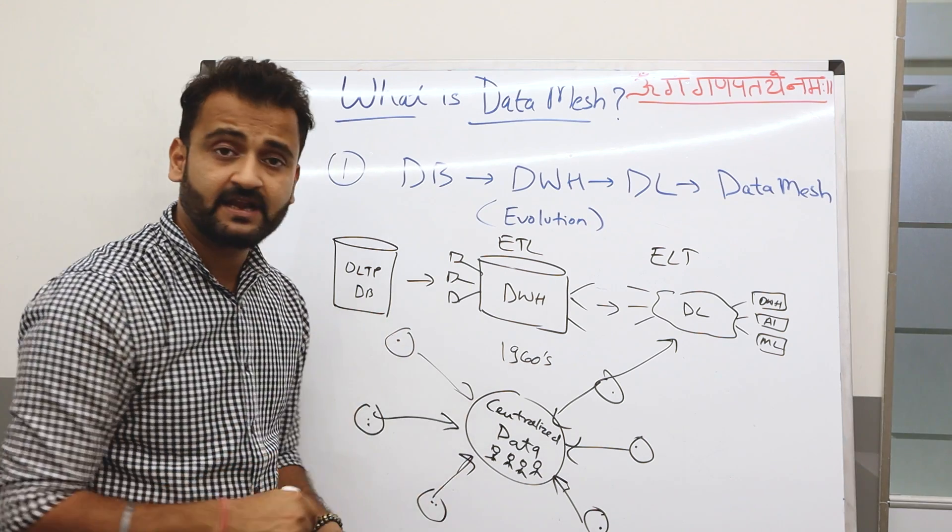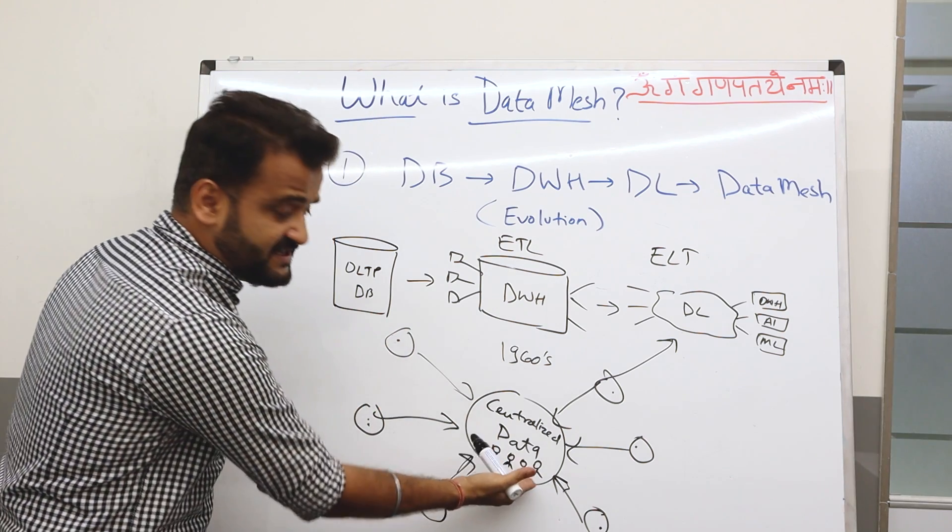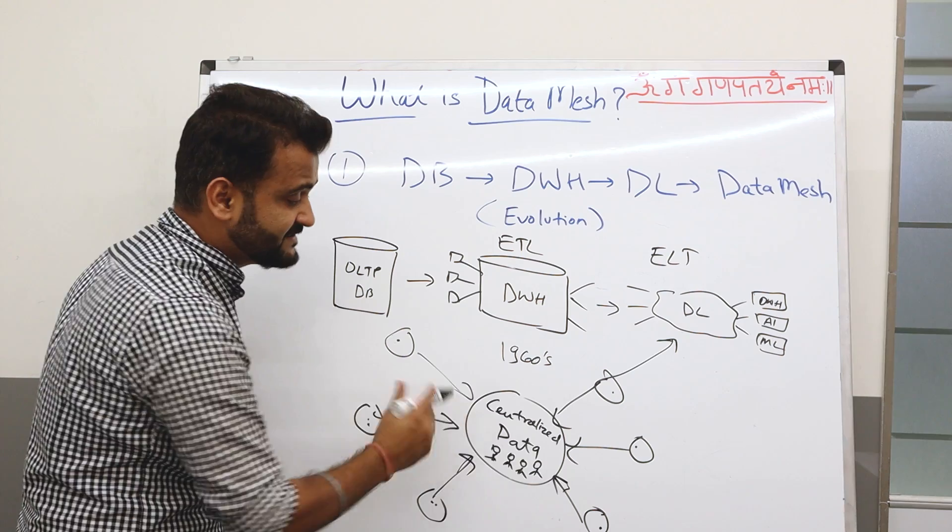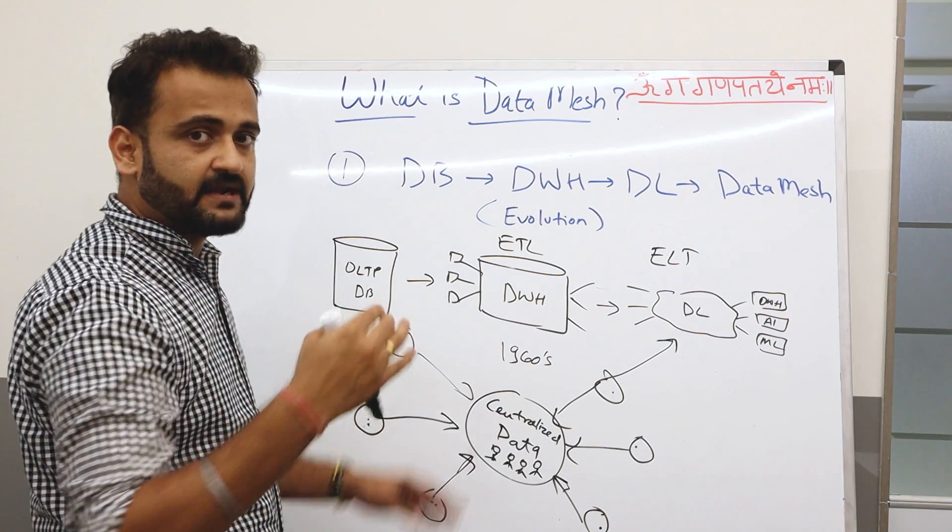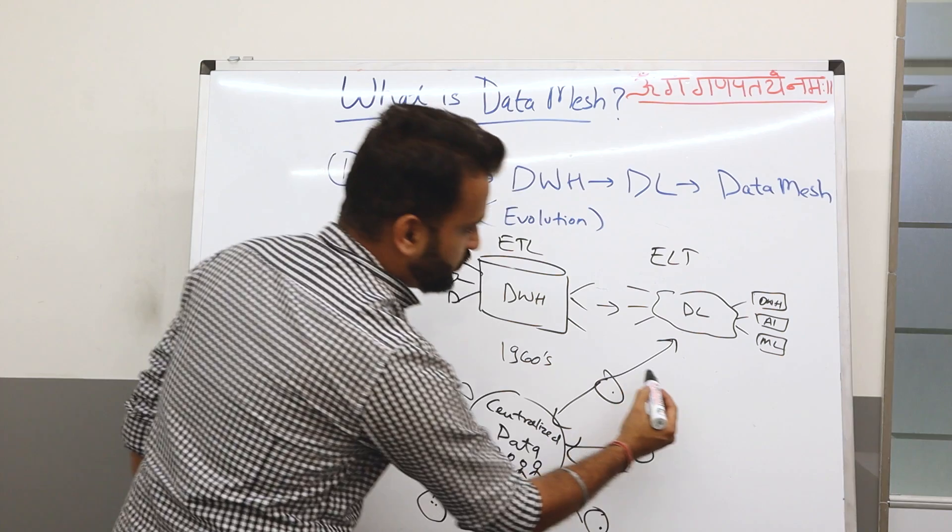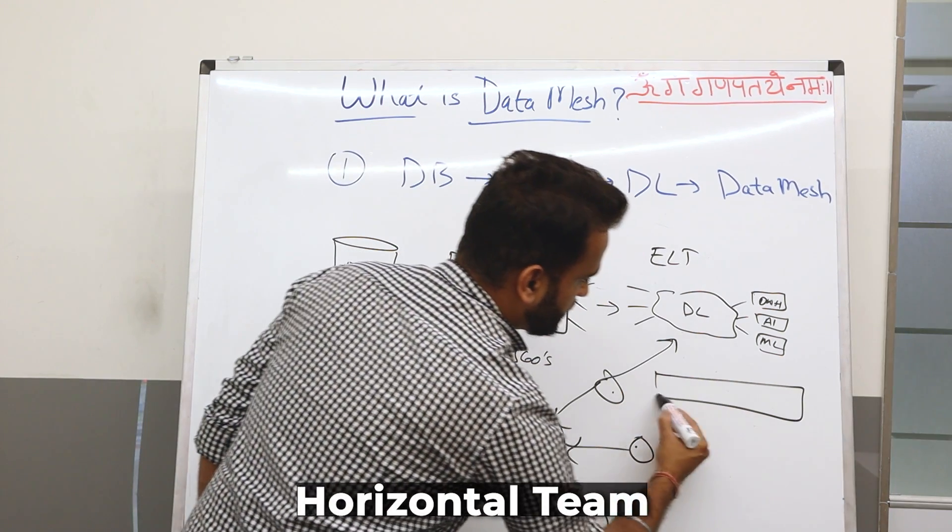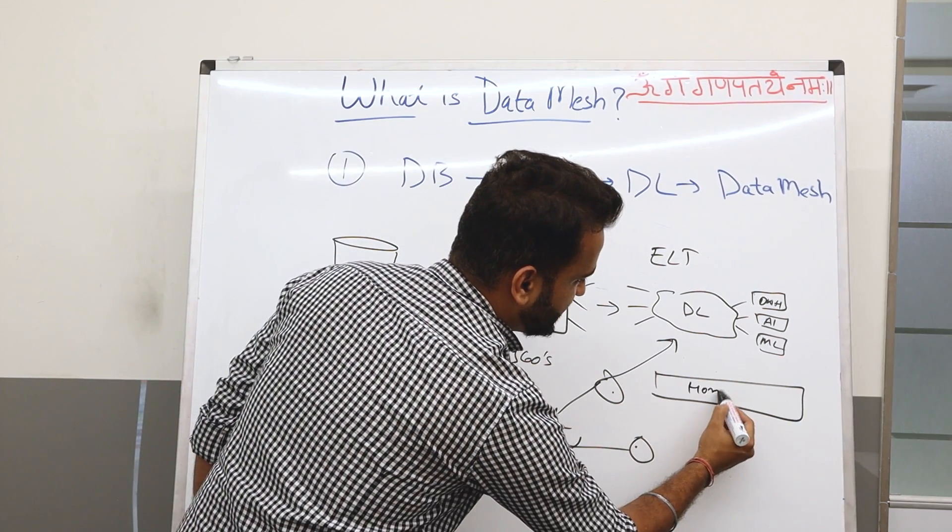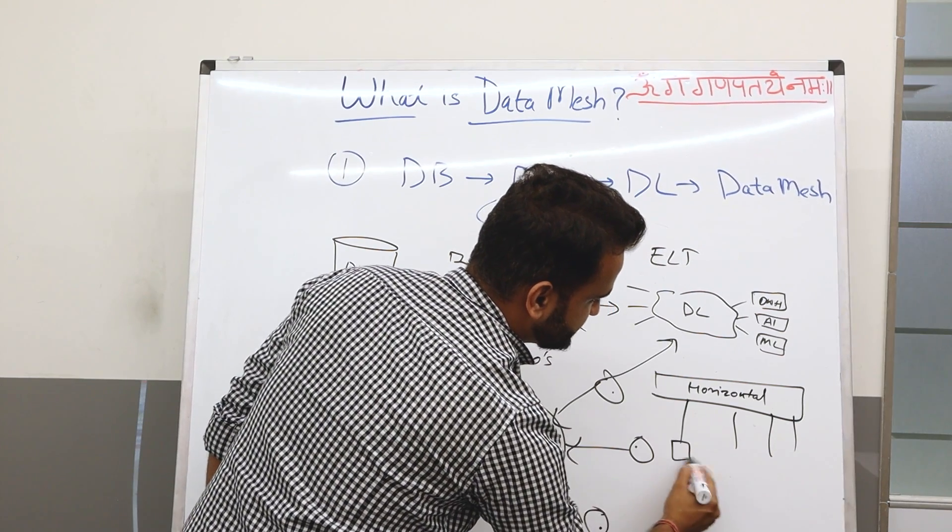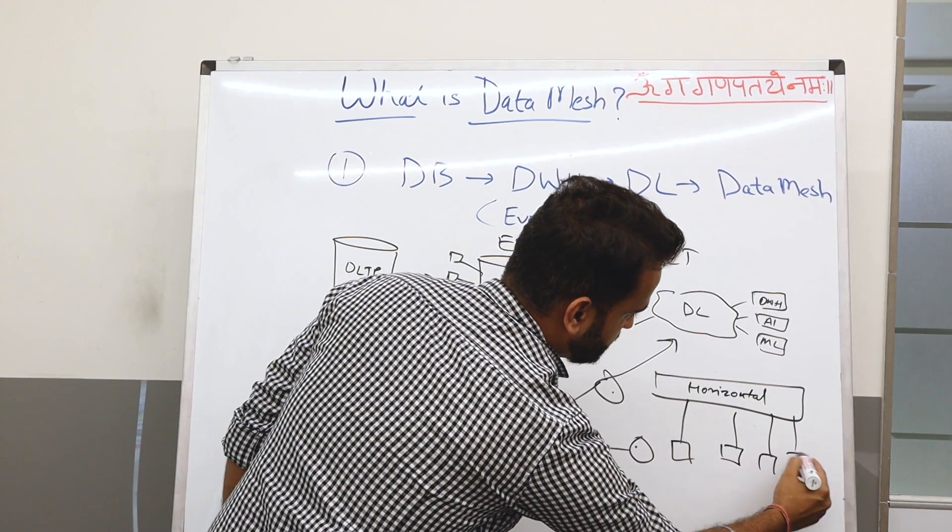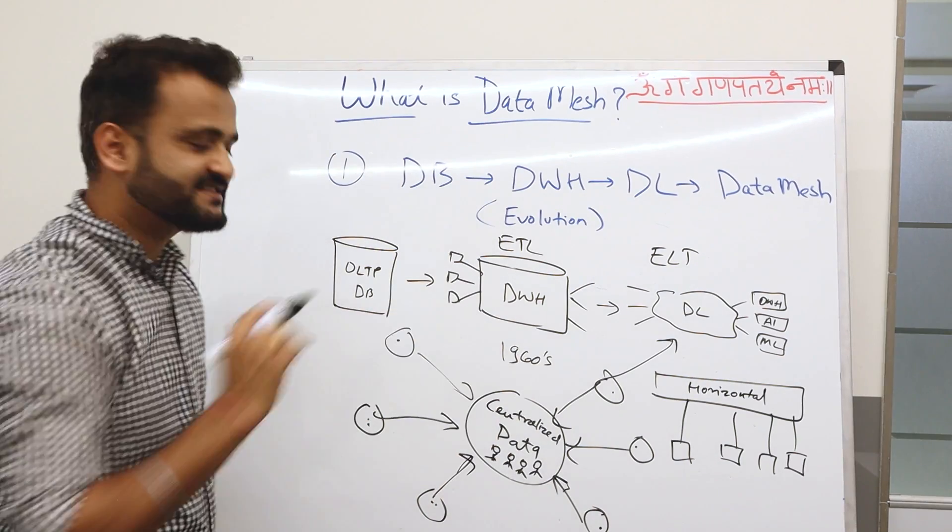So these are different domains—sales, marketing, warranty, manufacturing, finance, payroll—whatever, every company has different domains. Everyone has to come to the centralized data team for access, for getting the data, for getting the insights. These are your data engineers, your data analysts sitting at a centralized team. And generally that's why your data analytics and BI teams used to work as a horizontal team sitting across different functions. This has been a traditional structure.